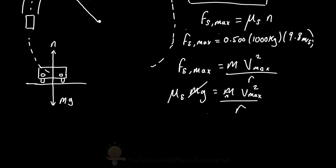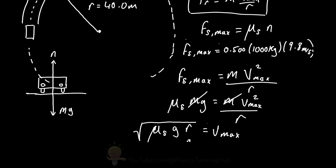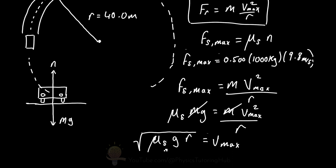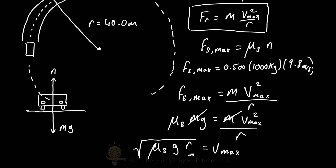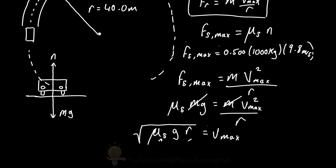When we rearrange this equation to make velocity the subject, the masses cancel, and we have: maximum velocity equals the square root of the coefficient of static friction multiplied by the acceleration due to gravity multiplied by the radius of the circle. It's also worth noting that this maximum velocity is independent of the car's mass. The only things that affect whether the car skids off the road are the coefficient of static friction between the tyres and the tarmac, the acceleration due to gravity, and the radius of the circle. A larger radius allows a faster speed, and a larger coefficient of static friction — more grip — also allows a higher velocity.